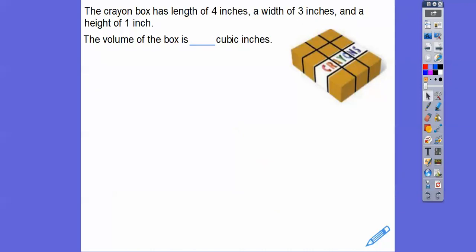So here we have a crayon box that has a length of four inches. The length is one, two, three, four. This is three. And the height is one. So the volume of this box, you can just count up the cubes. There's 12 cubes right here, so there's 12 cubic inches in that.